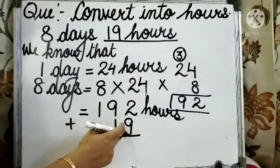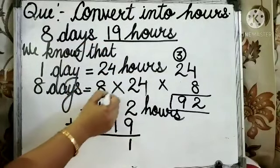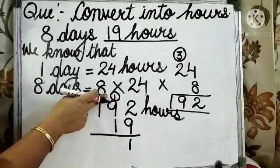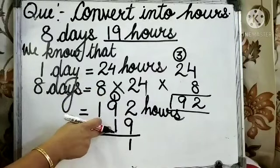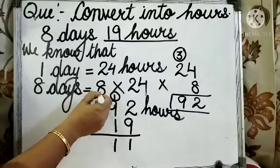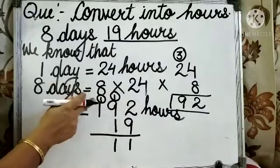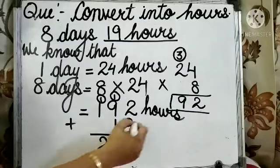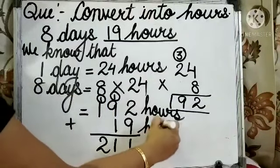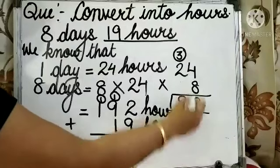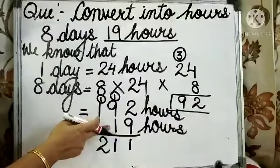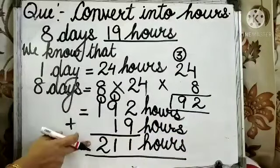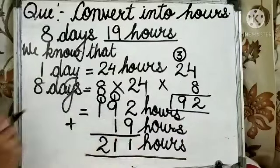2 plus 9 is equal to 11. 9 plus 1 is equal to 10. 10 and 1, again 11. So, write 1 here and 1 will be carried. 1 plus 1 is equal to 2. So, 19 hours. After adding these 19 hours, the answer is 211 hours.